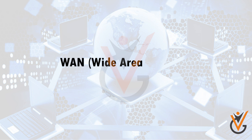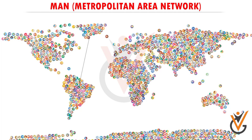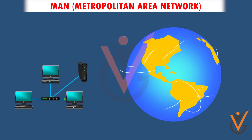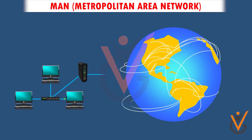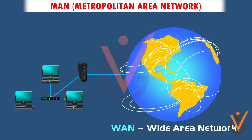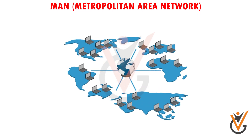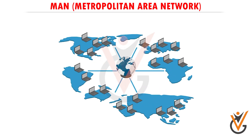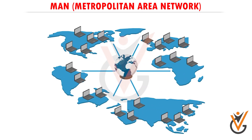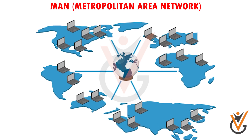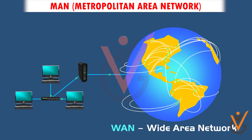A Wide Area Network is a network that extends over a large geographical area such as states or countries. A wide area network is quite bigger than a LAN and is not limited to a single location. It spans over a large geographical area through a telephone line, fiber optic cable, or satellite links. The internet is one of the biggest WANs in the world.